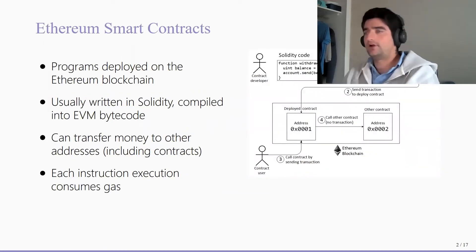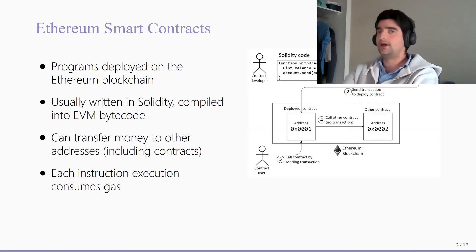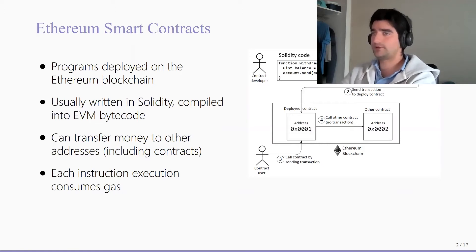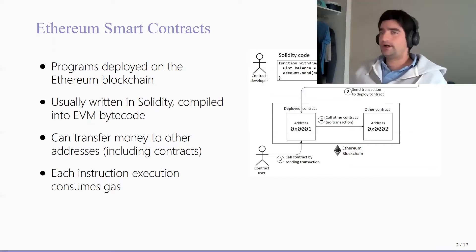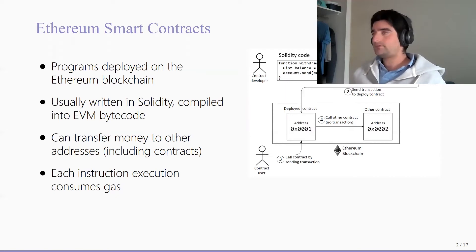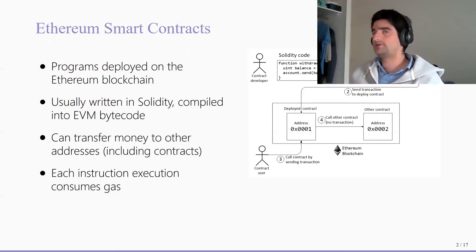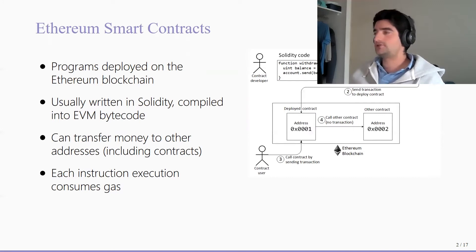First, just to get everyone up to speed, a very small background about Ethereum smart contracts. Ethereum smart contracts are basically small programs that are deployed on the Ethereum blockchain. They are typically written in a high-level programming language, typically Solidity, which is the most used one, and they're compiled down into bytecode designed to run on the Ethereum Virtual Machine, which we call the EVM. This is really a simple stack-based bytecode with regular instructions such as arithmetic operations.